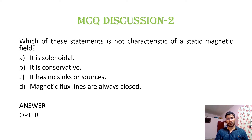MCQ 2: Which of these statements is NOT a characteristic of a static magnetic field? The static magnetic field is solenoidal, it has no sources or sinks, and magnetic flux lines are always closed — these are characteristics of a static magnetic field. However, it is conservative — that is NOT a property of the static magnetic field. Hence option B is correct.